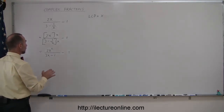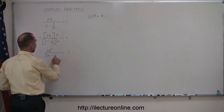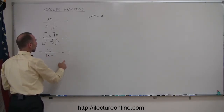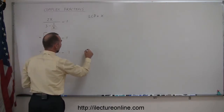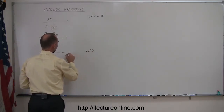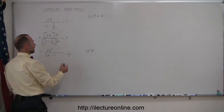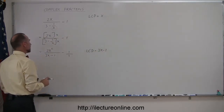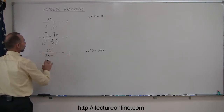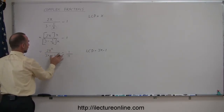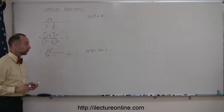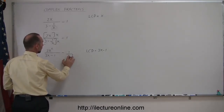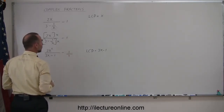In order to do that, I must have a common denominator. Since this has a denominator of 3x minus 1 and this one does not, I can see that the LCD in this case, if I write this as 1 over 1, becomes 3x minus 1. In order to subtract these two, I have to have a 3x minus 1 here, so I'm going to multiply the denominator by 3x minus 1, and of course I must also multiply the numerator by that.